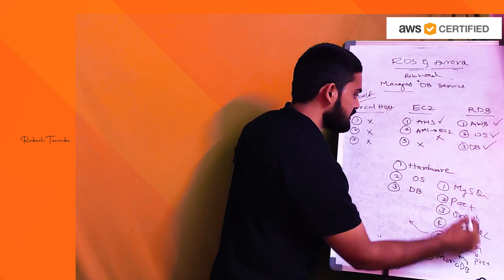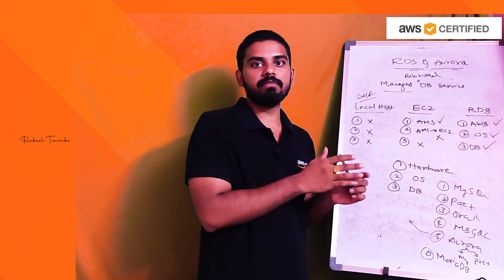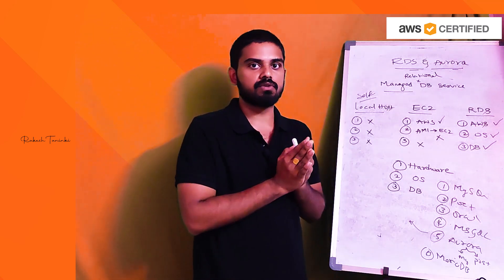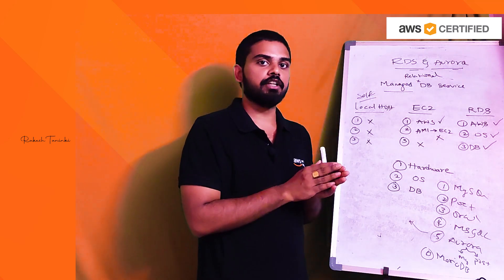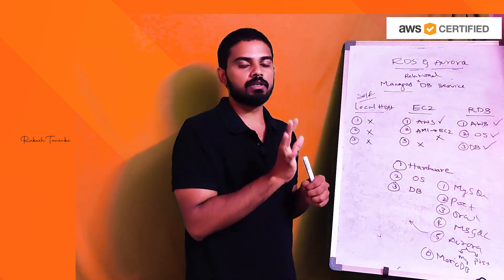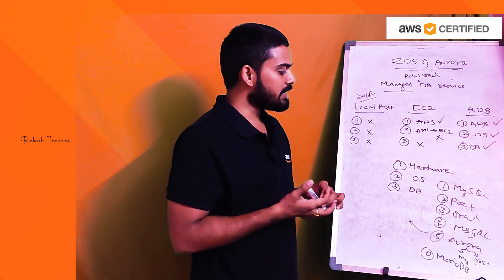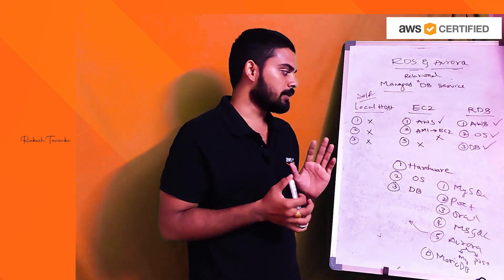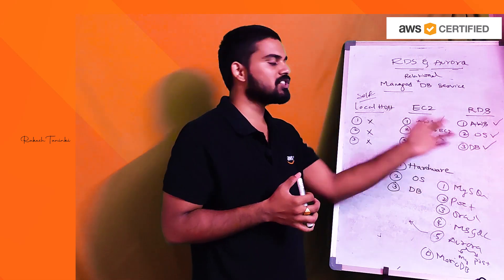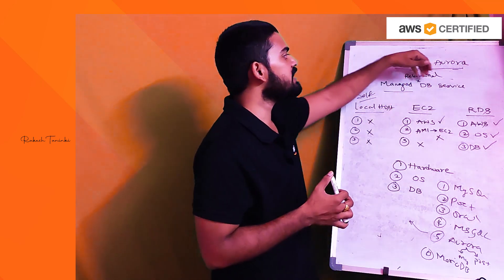There are six types of different engines that AWS supports in RDS. When creating an RDS instance, you don't need to choose an AMI like EC2 — you choose the engine name such as MySQL or PostgreSQL, then select an instance type. Hardware, operating system installation and maintenance, and database installation are all AWS managed. That is why RDS is called a managed database service.